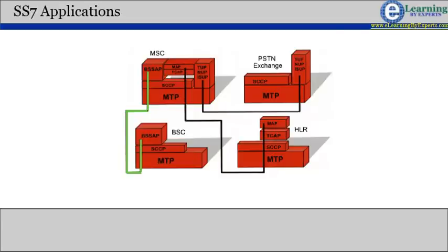In GSM network, a interface between MSC and GSM access network element BSC uses SS7 signaling transport to carry BSSAP messages.